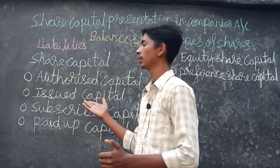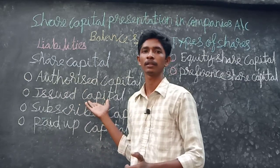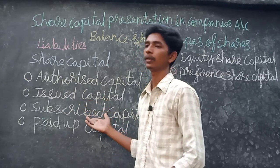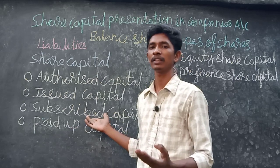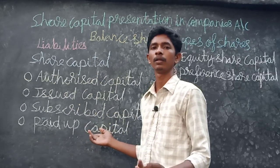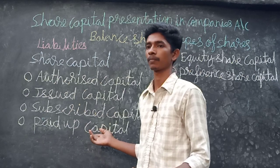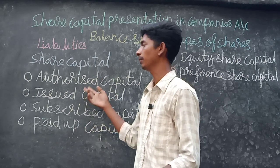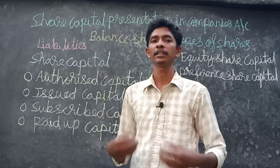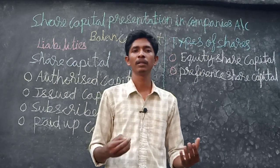Out of those 50,000 shares, they subscribed 40,000 shares, and out of those 40,000 shares, full payment was made for only 30,000 shares. That is how the company calculates the accounts — authorized, issued, subscribed, and paid-up share capital.